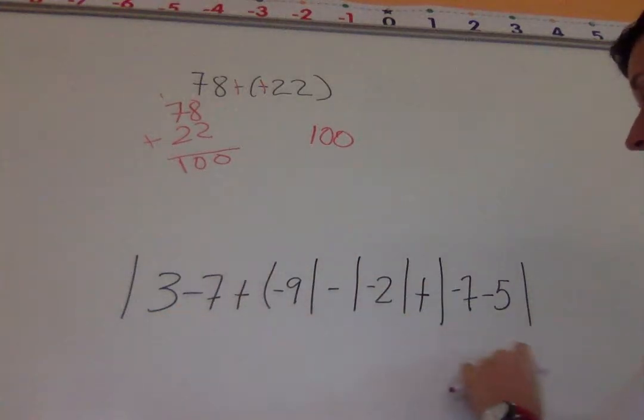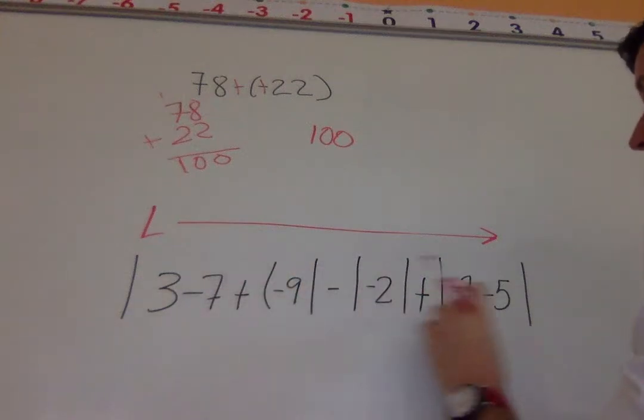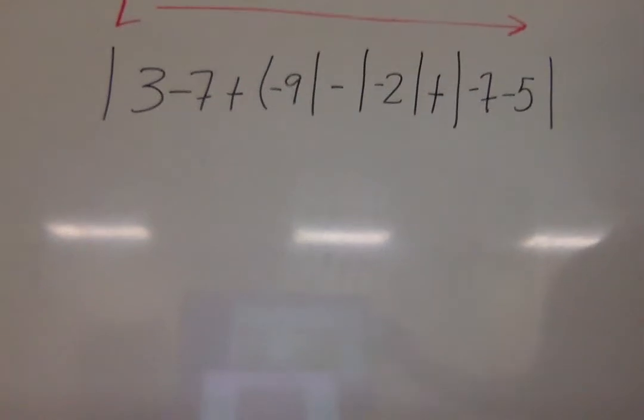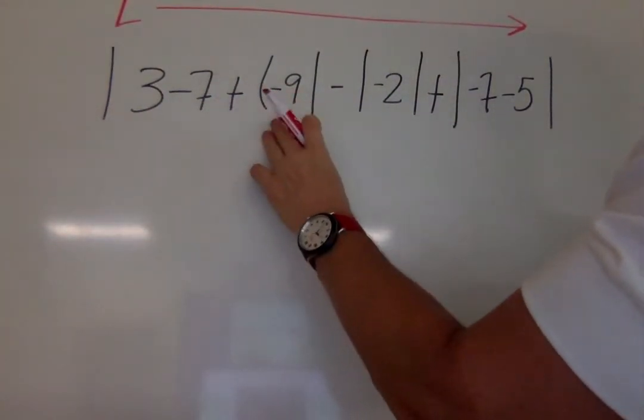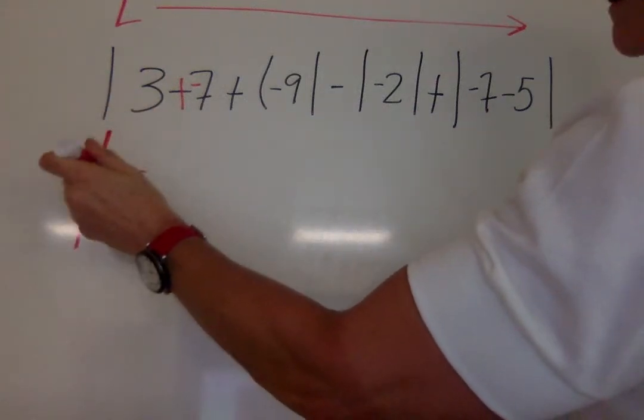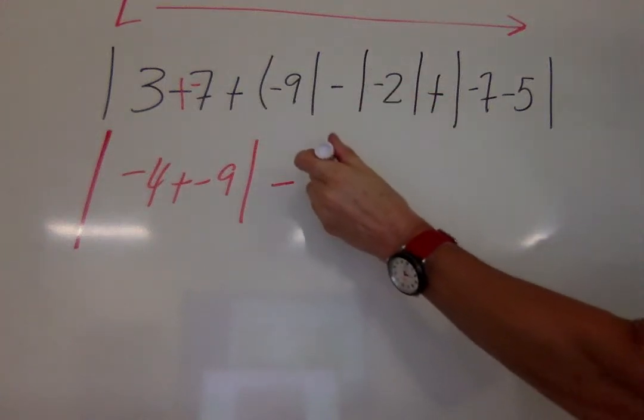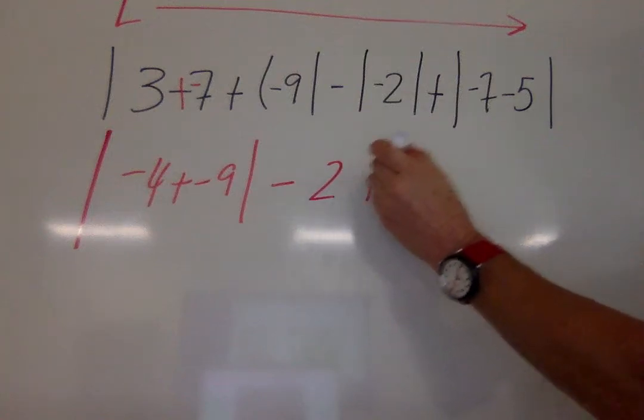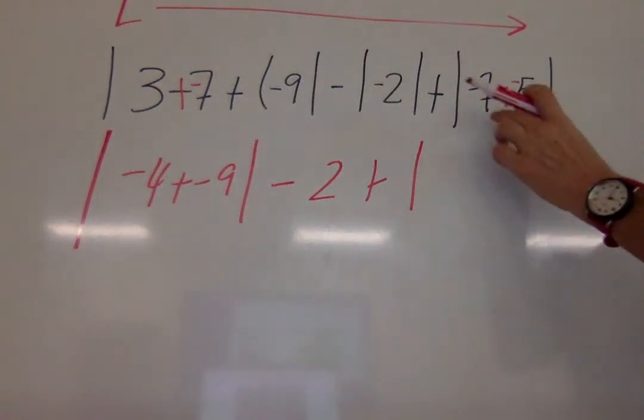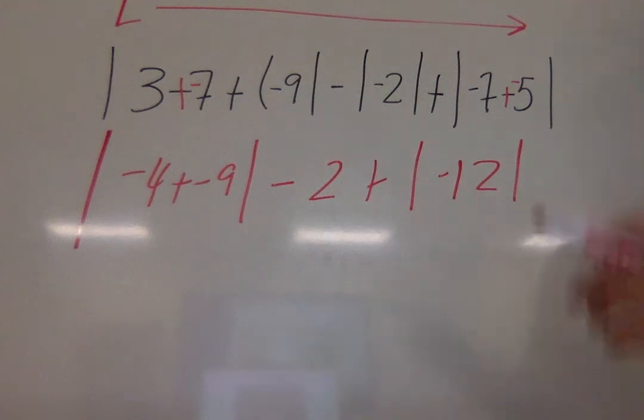So remember, on these big long problems, we work from left to right. And we work inside the absolute value and rewrite it. So we're going to work inside each absolute value and rewrite the equation. So we have 3 minus 7 plus negative 9. So let's make that 3 plus negative 7. That's going to equal the absolute value of negative 4 plus negative 9 minus, well, that's the absolute value of negative 2. We know that. That one's 2. Plus the absolute value of negative 7 minus 5. We're adding the opposite. 7 and 5 is 12. That's negative because both signs are negative.